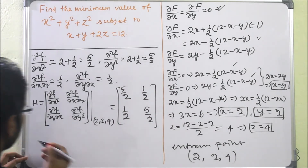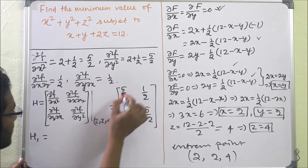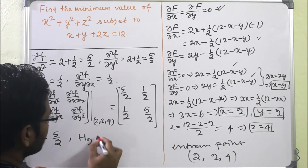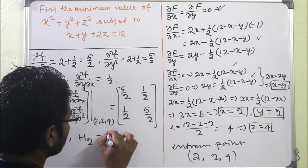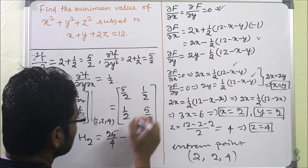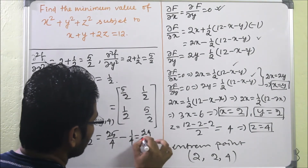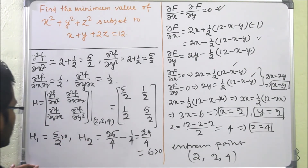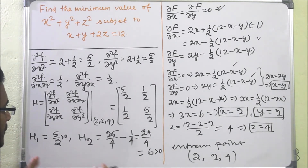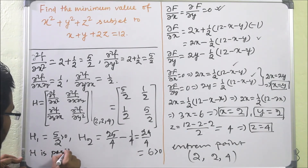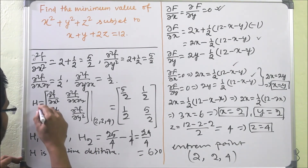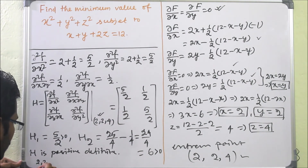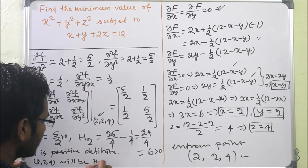We find the principal minors: H₁ = 5/2, which is positive. H₂ = det(H) = (25/4) − (1/4) = 24/4 = 6, which is also positive. Since all principal minors are positive, the Hessian is positive definite. Therefore, the point (2, 2, 4) is a minimum point.